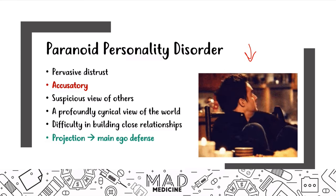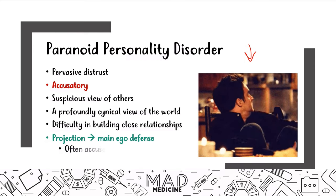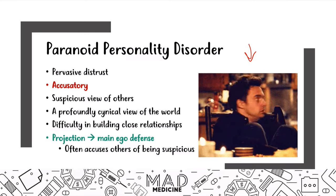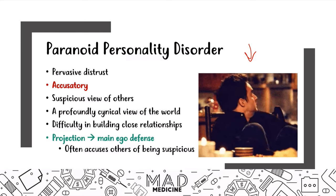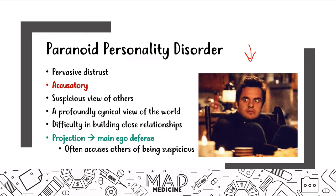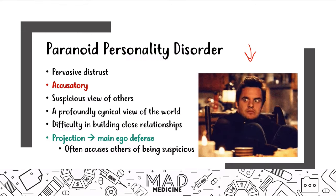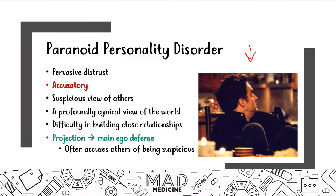Go visit our video on ego defenses. What paranoid patients often do is accuse someone else of being paranoid — they'll say, 'You're paranoid, you're the one who thinks aliens are reading our minds.' On the USMLE Step 1, you'll spot this from a mile away. If a patient is accusing someone, doesn't believe anyone, has a cynical view, and is suspicious, they're probably paranoid personality disorder.